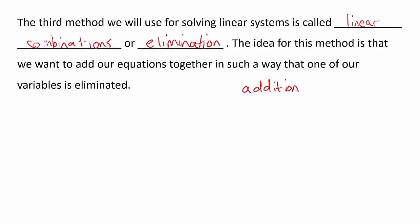All three of these names make sense once you realize what the method is. In this method, our goal is to add our two equations together in our system in such a way that one of our variables will be eliminated. So that's where the name elimination comes from. We're adding the equations together, and another way of thinking of this addition is that we are combining our equations. Whichever way you want to think of it is fine, but it is helpful if you can remember that they mean the same thing.